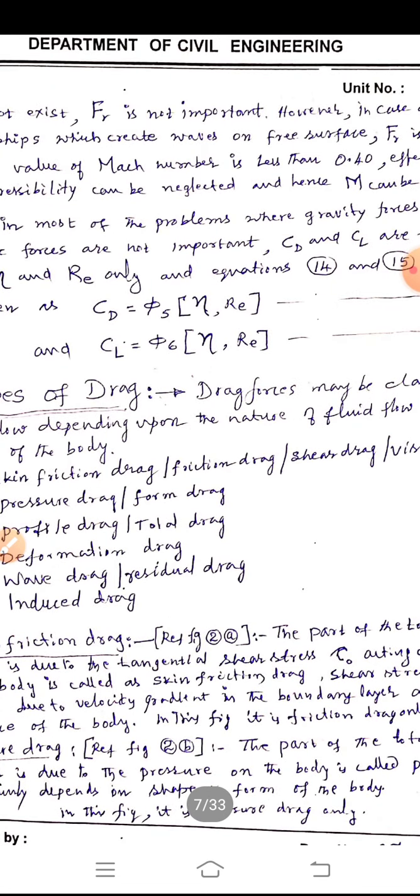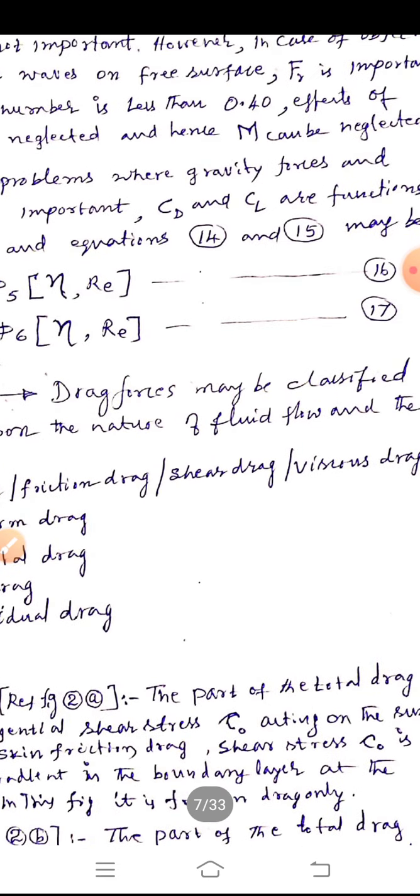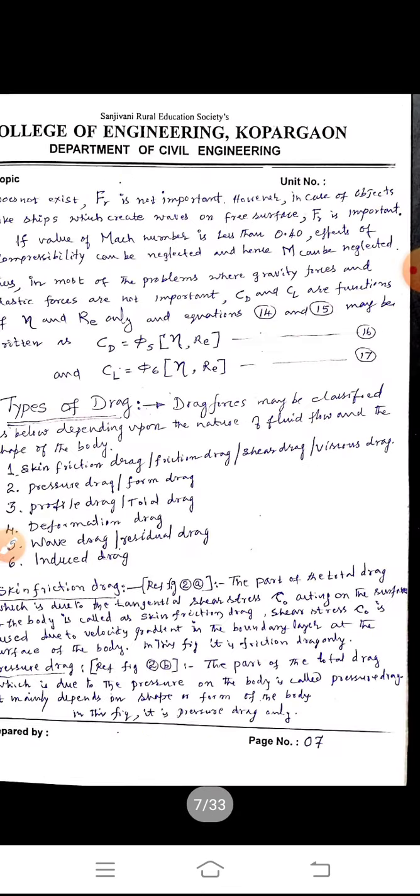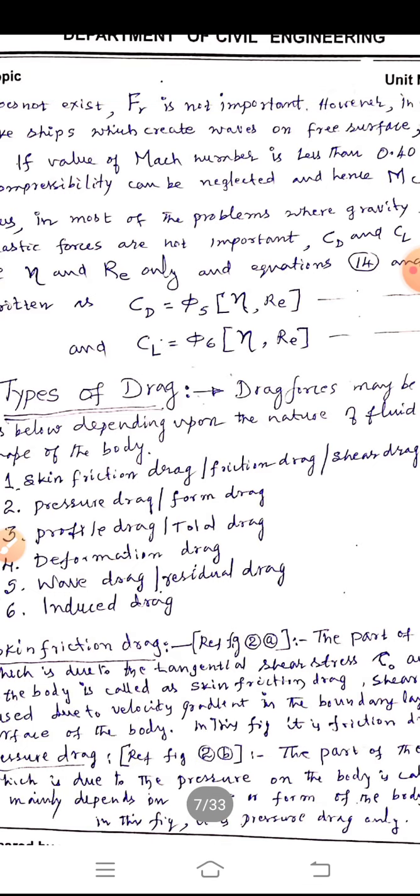Now, types of drag. There are six types of drag we can define or classify based on the nature of fluid, flow and shape of the body. One, skin friction drag or also known as shear drag, also known as viscous drag. Second, pressure drag or form drag. Third, profile drag or total drag. It is nothing but the summation of these two above. Fourth one, deformation drag. Fifth one, wave drag, also known as residual drag. That is nothing but the total drag. Wave drag is equal to total drag minus all other drags and induced drag. This is in case of aeroplane. This is in case of ship. And this is with respect to Reynolds number having very low viscosity of fluid.